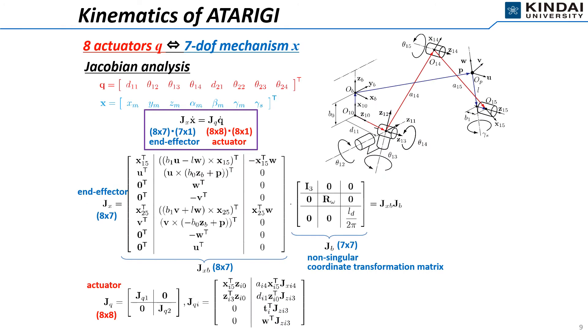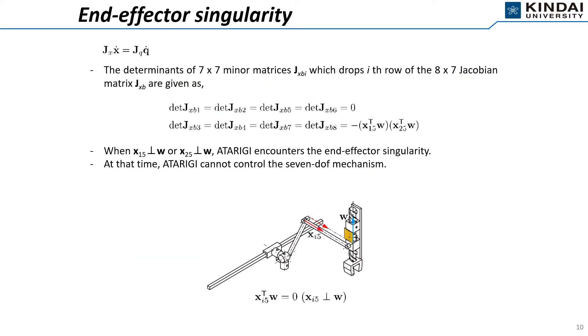This slide shows the Jacobian analysis between 8 actuators and 7DOF mechanism. Jx is the Jacobian matrix of the end-effector side, and Jq is the Jacobian matrix of the actuator side. We have derived the Jacobian matrix of Atarigi in the previous research, as shown in these equations.